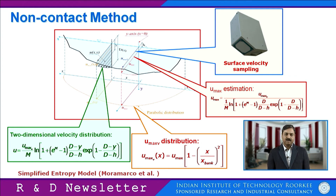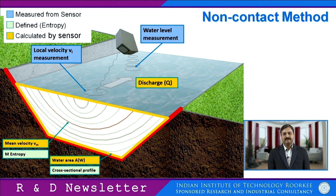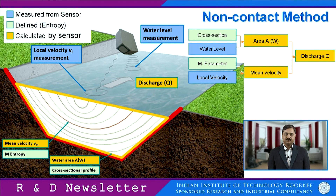This would lead to development of a 2-dimensional velocity profile. In this schematic the entire operation is shown — the sensor is sensing the depth as well as sensing one-point velocity measurement. Then using the entropy principle we try to estimate the average velocity for the section, and the section properties are also known, from which the flow area is computed. Once the flow area and the average velocity are available, we can compute the discharge using non-contact methods. Thank you very much.